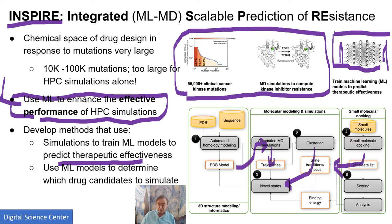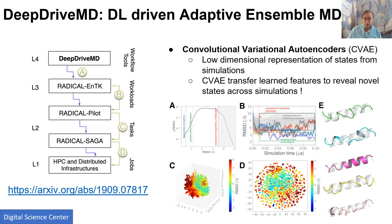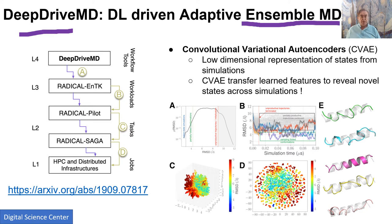At the end you get a list of potential drugs. This is called DeepDriveMD — Deep Learning Driven Adaptive Ensemble. The ensemble means a collection of simulations. Ensembles have always been used, but previously had a bad reputation because they just ran over everything. These AI-driven ensembles represent a much more intelligent search of the space, making the search over phase space much better.